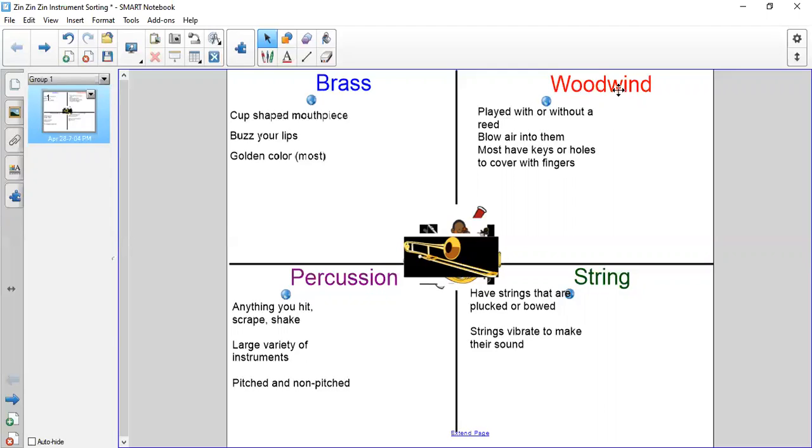The woodwind family is next. The woodwinds are played with something sometimes called a reed. A reed is a little piece of wood that sits in the mouthpiece and it vibrates to make the sound. Some instruments have them and some instruments don't. You blow air into them—that's why they get their wind name—to make their sound, and most of them have keys or holes to cover with fingers.